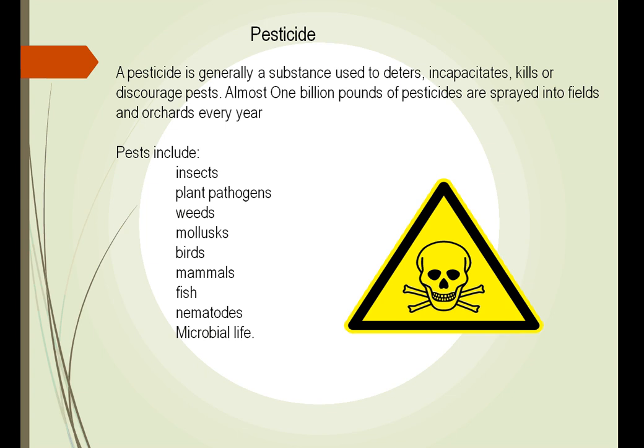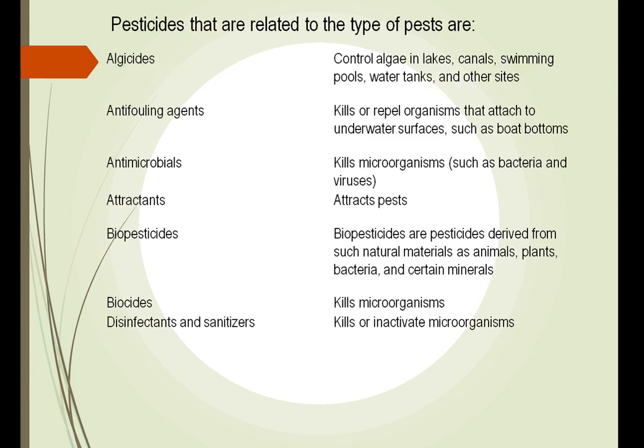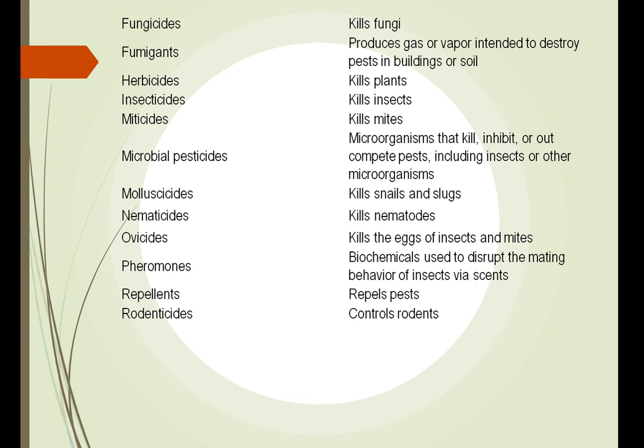One billion pounds of pesticides are sprayed into fields every year. They are related to the type of pest that they target, from controlling algae to controlling microorganisms and biocides, antimicrobials to kill microorganisms such as bacteria and viruses, attractants to attract pests, and fungicides to kill fungus.